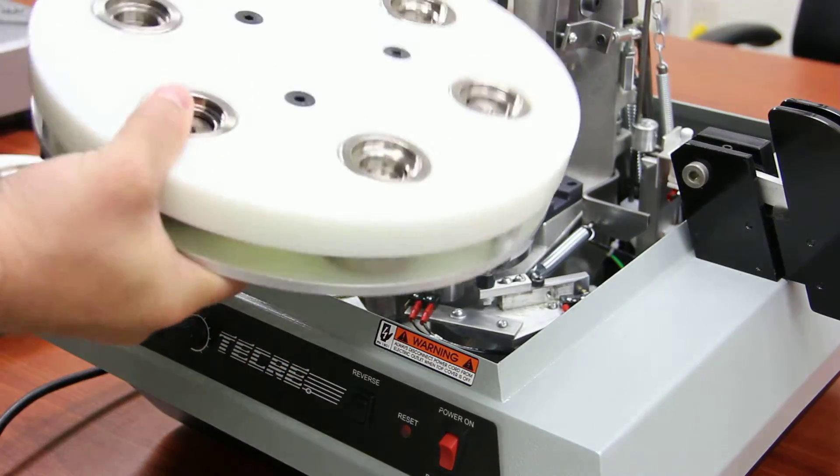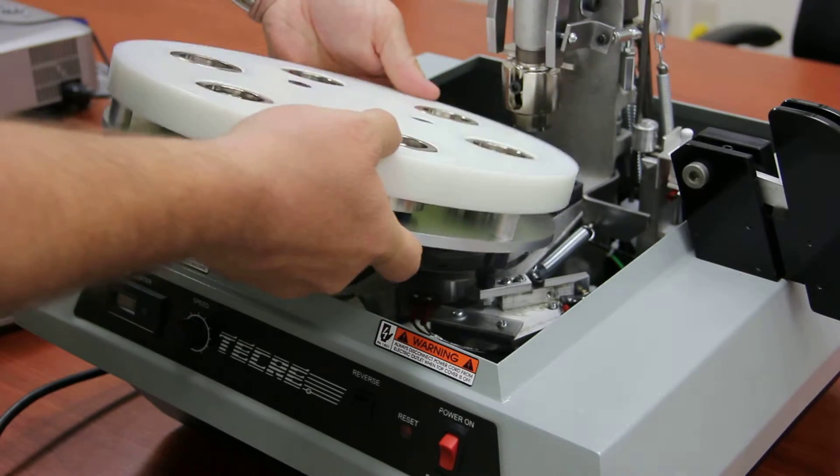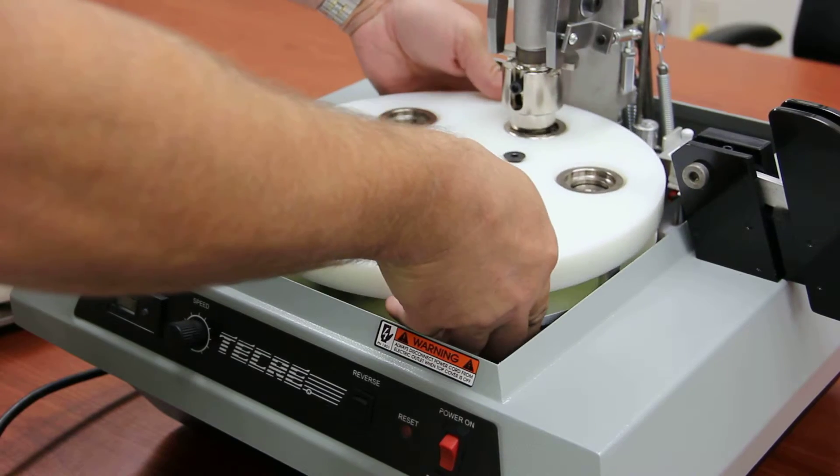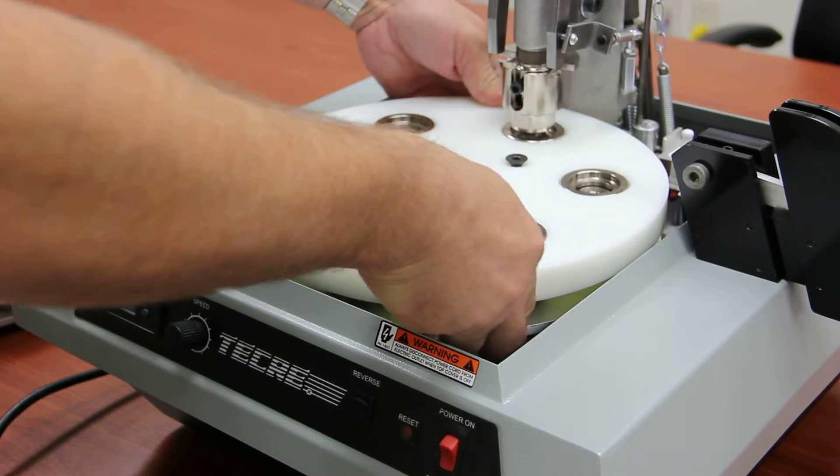Grab the die set and make sure one of the three screw holes is at one o'clock. Feed it in the same way you took it out, at an angle. Just wiggle it and you'll feel it drop into place.